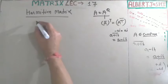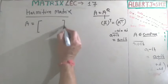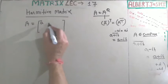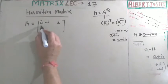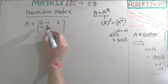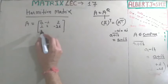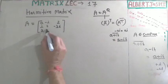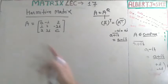I will show you one example. I am taking a matrix A with entries: the diagonal has values a, b, and c; the off-diagonal entries include minus i, 2, minus 3i, and their counterparts i, 2, and 3i. This matrix is a Hermitian matrix.